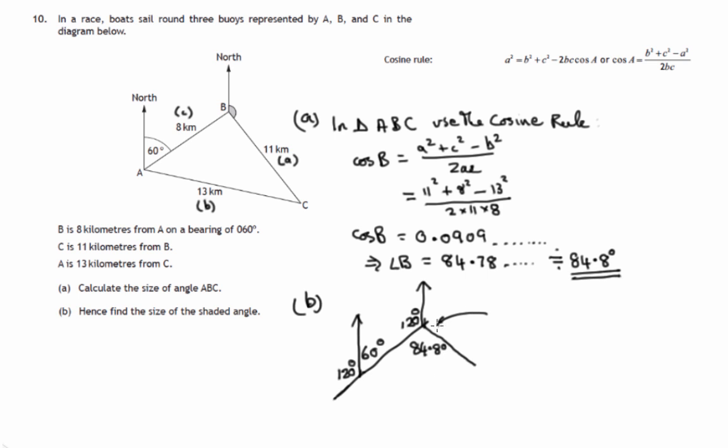So this angle is going to be 360 degrees. That's the complete turn minus whatever these other two angles come to. So it's 360 minus 204.8.